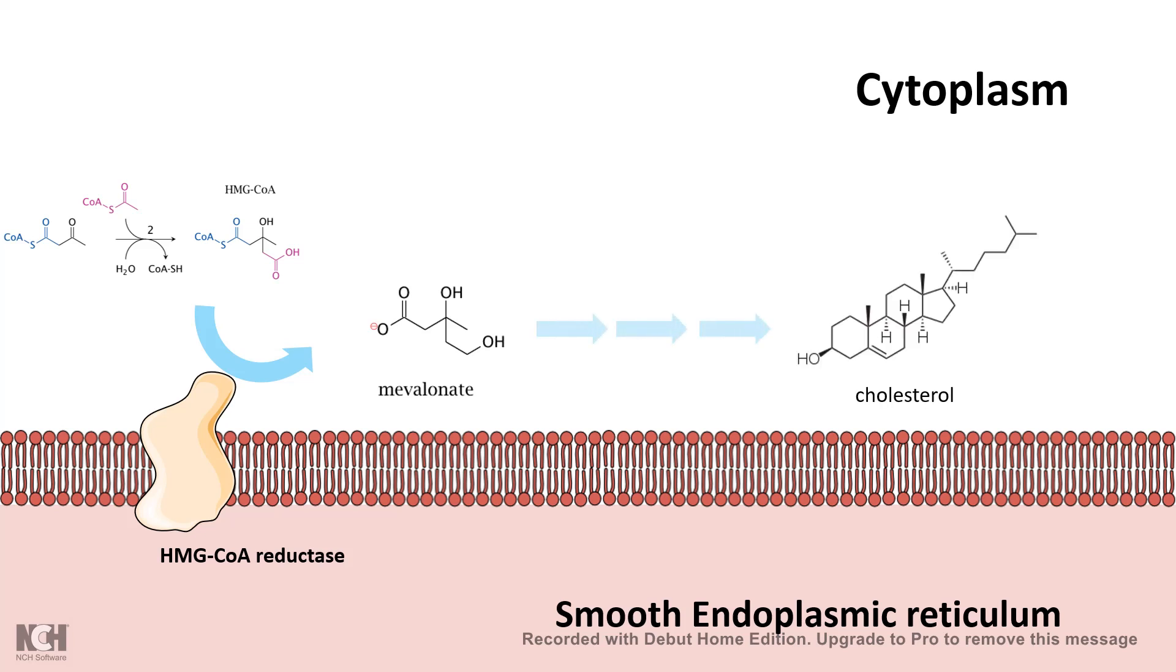And after a series of pathways, mevalonate gets converted to cholesterol. And cholesterol could either be incorporated into the membrane or cholesterol could be used as a raw material to create steroid hormones. So that is why smooth endoplasmic reticulum is super important for plasma membrane biogenesis itself.